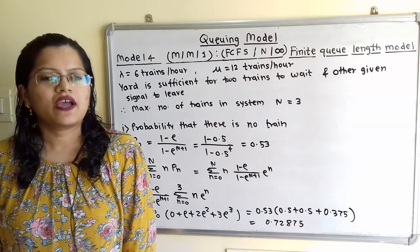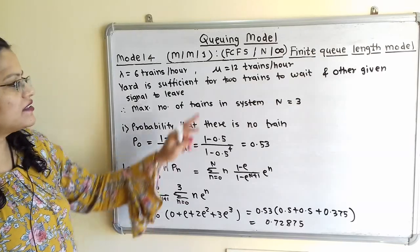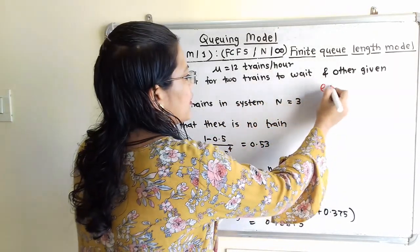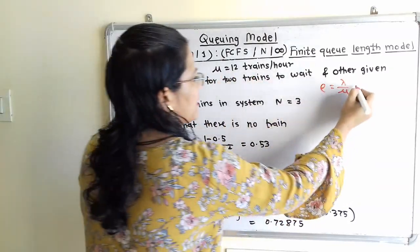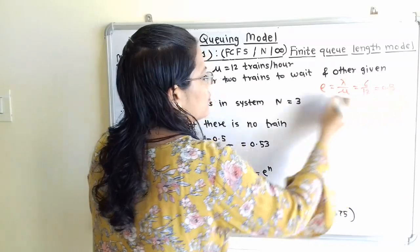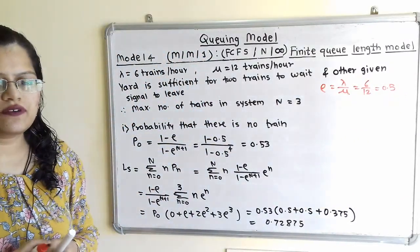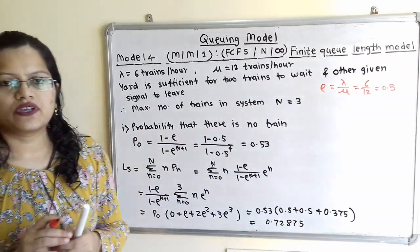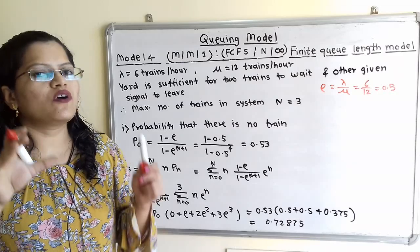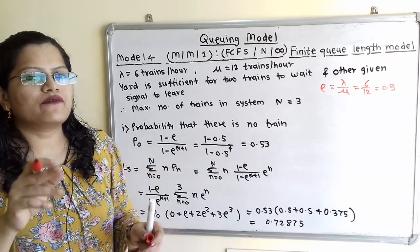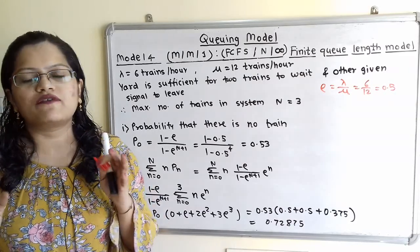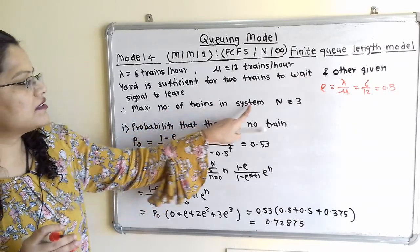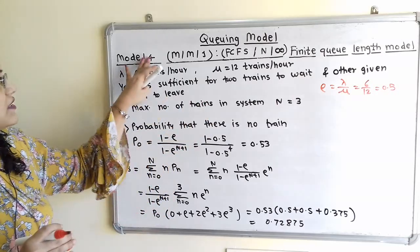From the given data: λ = 6 trains/hour, μ = 12 trains/hour, so ρ = λ/μ = 6/12 = 0.5. The yard holds 2 waiting trains plus 1 being served, so total maximum trains in the system is N = 3. This question is under Model 4.